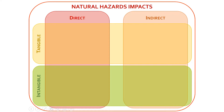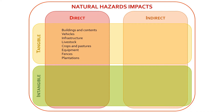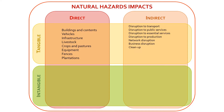It's useful to have a table including examples of different types of impacts. We have direct and indirect impacts, which can be tangible or intangible. Examples of direct tangible impacts include buildings and contents, vehicles, infrastructure, livestock, crops and pastures, equipment, fences, and plantations. Examples of indirect tangible impacts include disruption to transport, disruption to public services, disruption to essential services, disruption to production, network disruption, business disruption, clean-up costs, alternate accommodation, emergency and relief agencies, legal costs associated with lawsuits, and tourism.